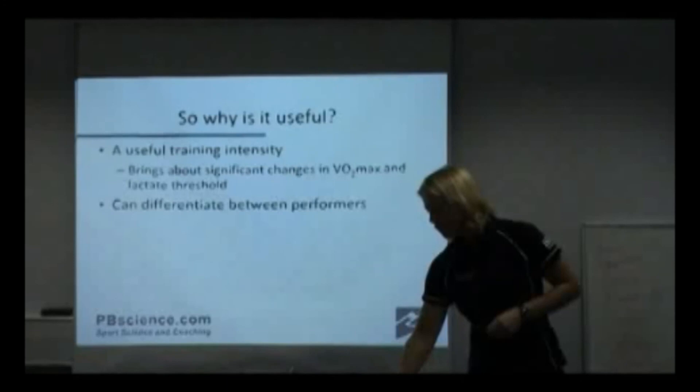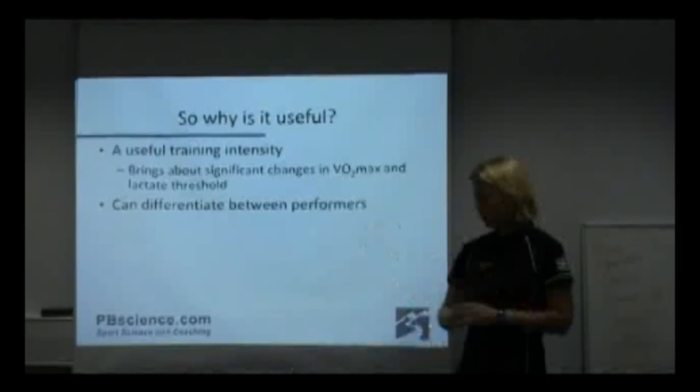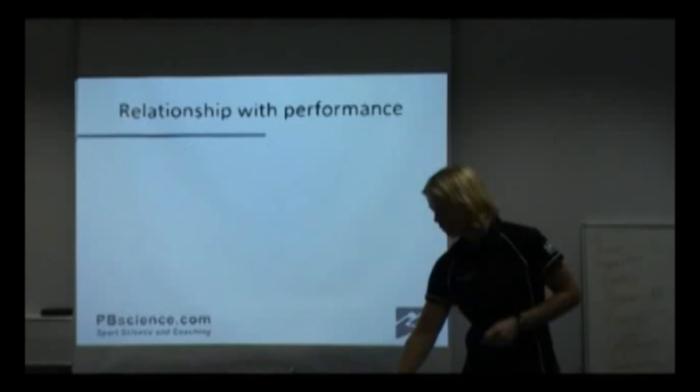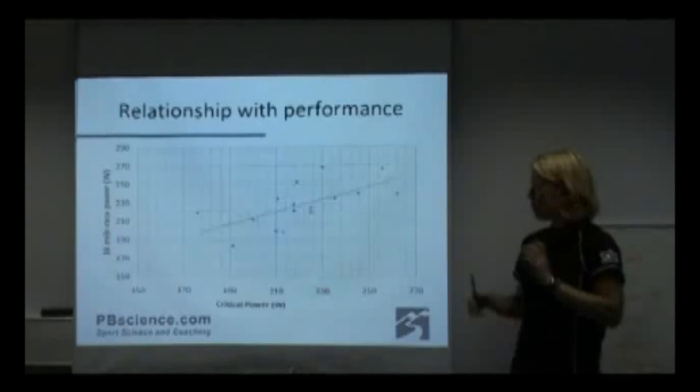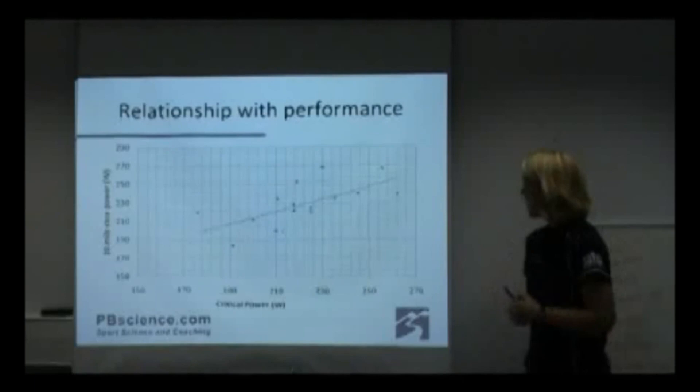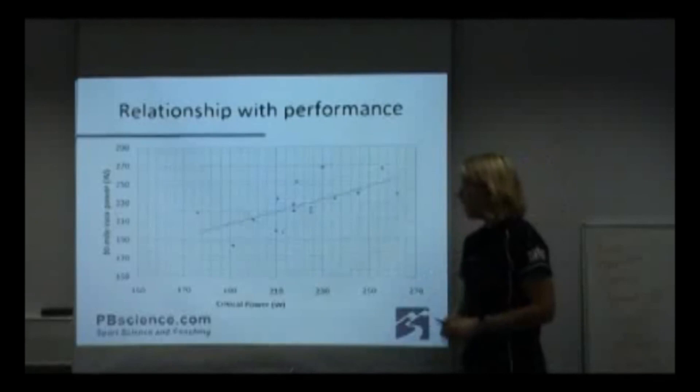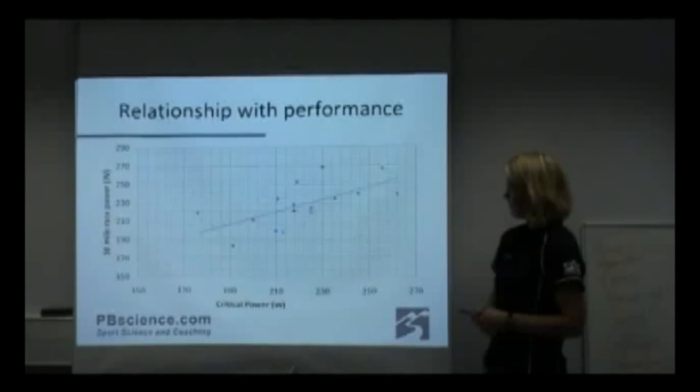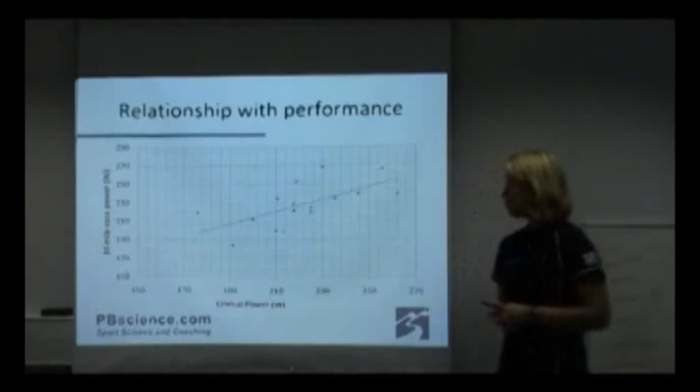We've also found that critical power helps us spot who are good performers and who are less so. This is data from a group of female time trialists — some of you in this room are actually in this data. You can see that generally it's a very good relationship between what your critical power was and your 10-mile race power. So again, it seems to be a pretty good predictor.